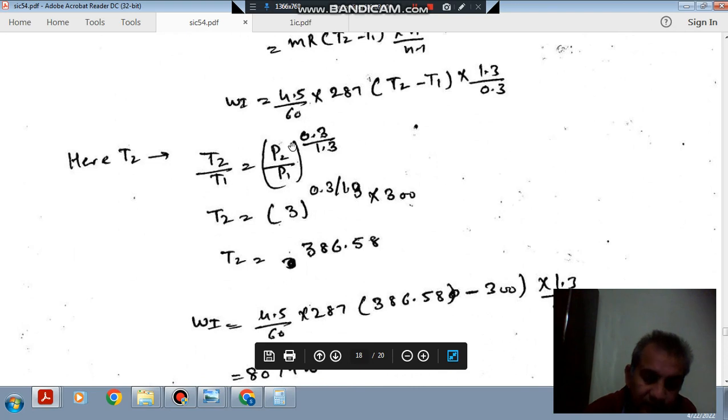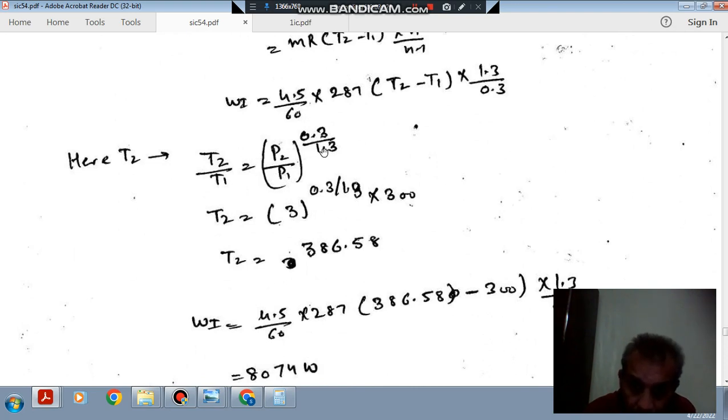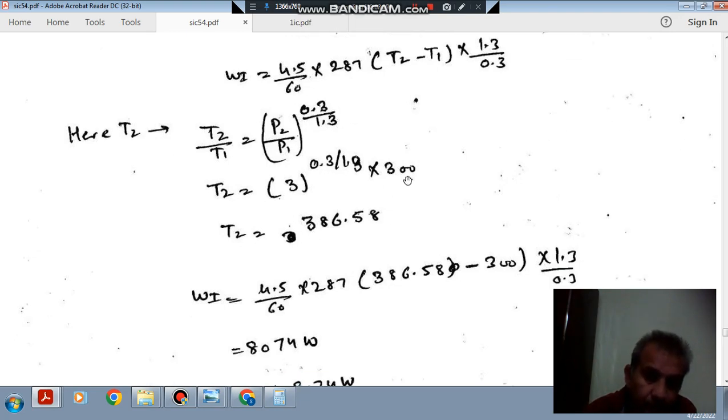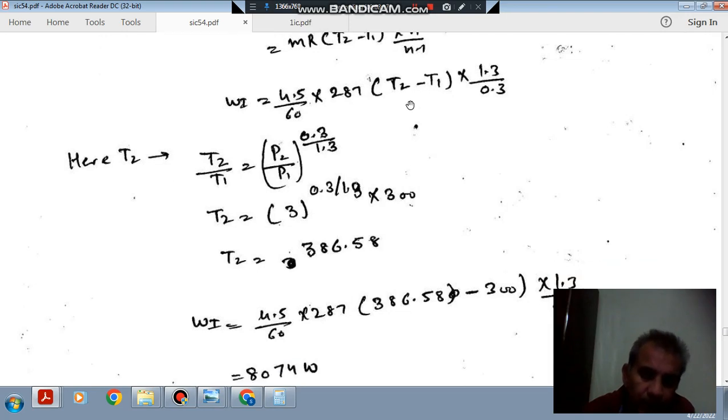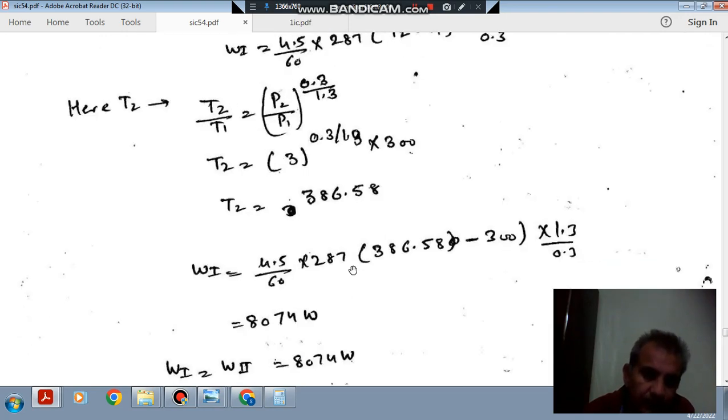Pressure ratio is 3. T2 is 386.58 Kelvin. T1 is 27 degrees Celsius. Here all the values are known: T2, T1, so if we put the value of T2 and T1, then we can find the work done.